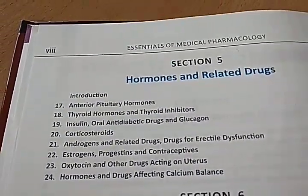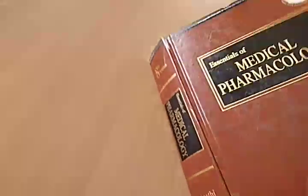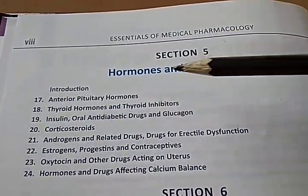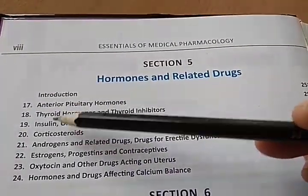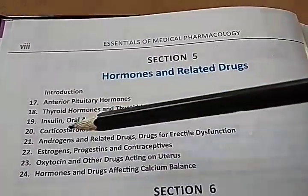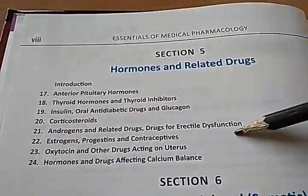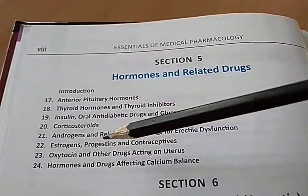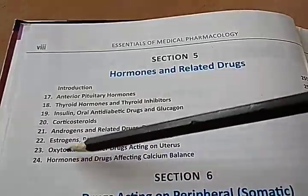Hormones and related drugs — this is section 5. We are looking at Tripathi Pharmacology. So you have pituitary hormones, thyroid hormones, insulin — usually given by subcutaneous route. Corticosteroids usually will be given for autoimmune conditions. Estrogen, progestin, contraceptives — those are also hormones. Oxytocin, etc.